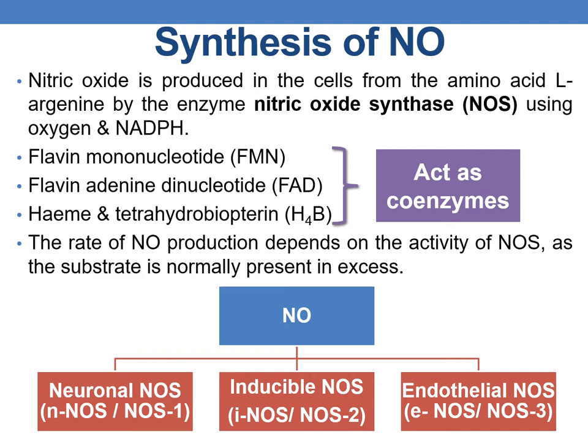Other cofactors include flavin mononucleotide (FMN), flavin adenine dinucleotide (FAD), heme group, and tetrahydrobiopterin (H4B), all acting as coenzymes. The rate of nitric oxide production depends on the activity of NOS, as the substrate L-Arginine is normally present in excess. There are mainly three types of nitric oxide synthase: neuronal NOS, inducible NOS, and endothelial NOS.